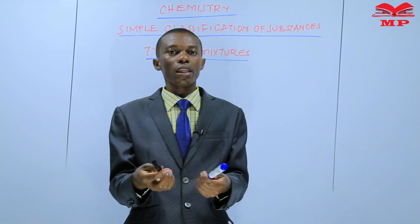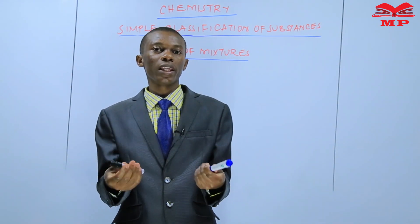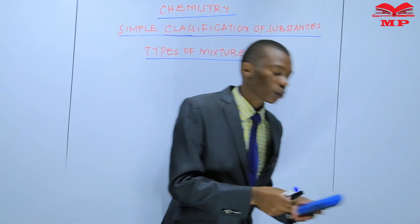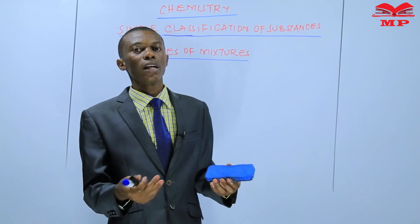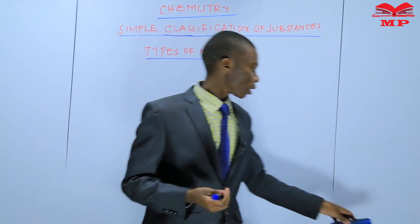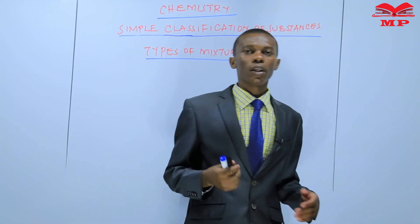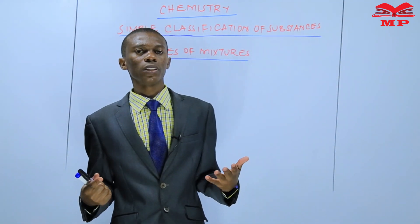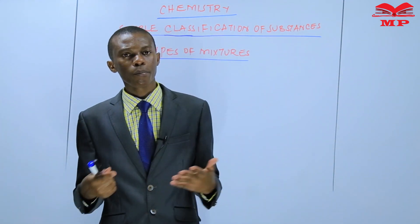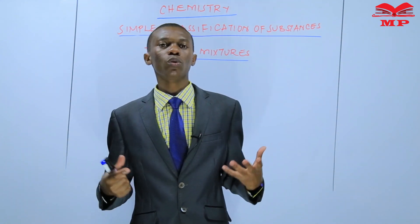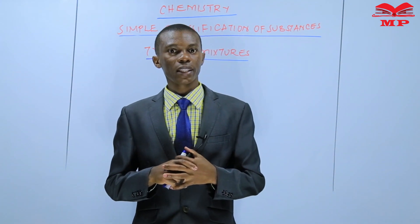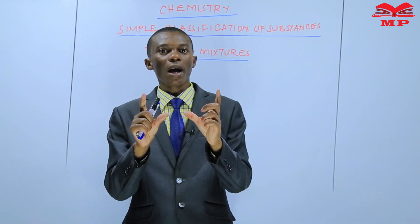For example, I have two pens here. These two can be grouped together because they are solids. When I get my duster, it is also a solid. Therefore, these two can be grouped together because they are solids. The example of a liquid-liquid mixture we gave was water, paraffin, diesel, and petrol. Those can be grouped together because they are all liquids — they share that characteristic.